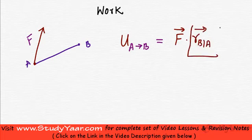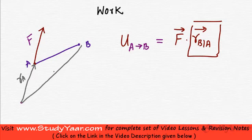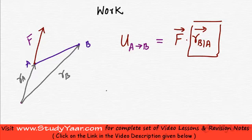My work done from A to B is given by F vector dot R_B with respect to A vector. What is this? This is the displacement of B with respect to A. If I suppose this is my reference point, then this is going to be R_A, this vector. And this is going to be R_B. This is the displacement of this point. This is the displacement of this point. Therefore, displacement of B with respect to A is going to be R_B minus R_A.